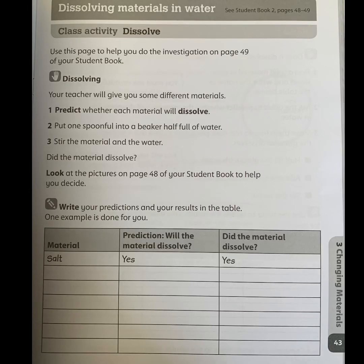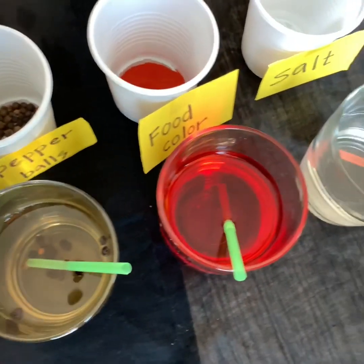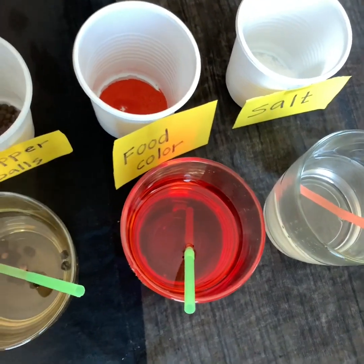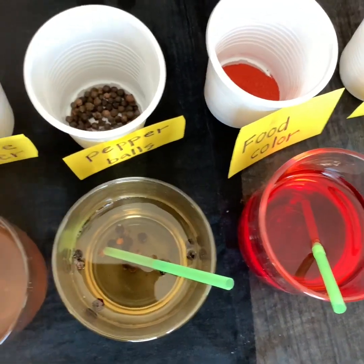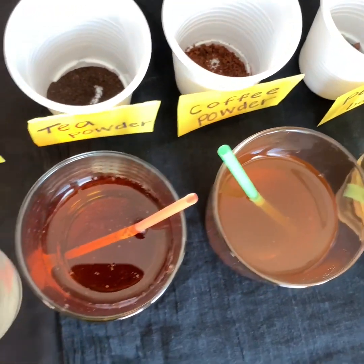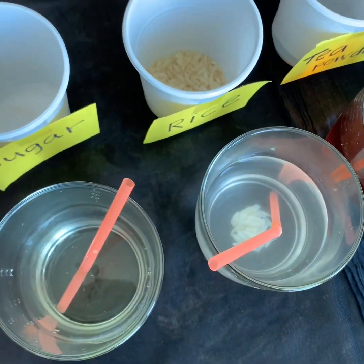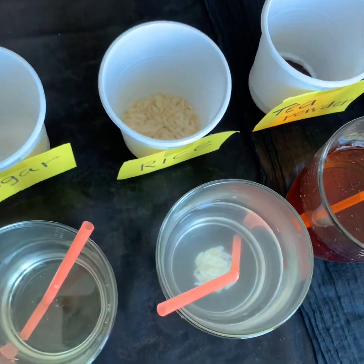Now I want you to refer back to your worksheet. We are going to fill in all the materials we have used in this experiment: salt, food color, pepper balls, coffee powder, tea powder, rice, and sugar. Before we reach the results, I want you to put your thinking caps on and work like scientists to predict which materials will mix and which will not.